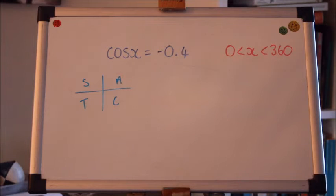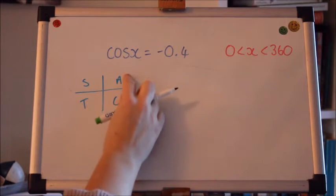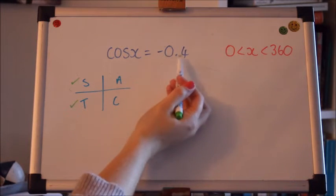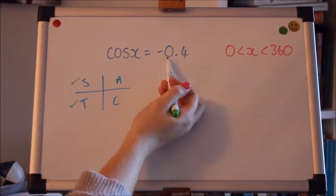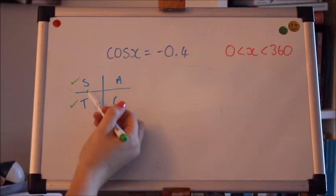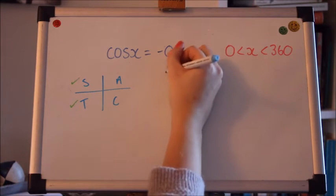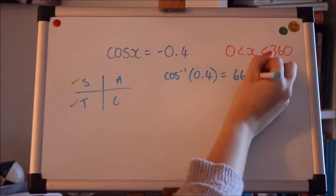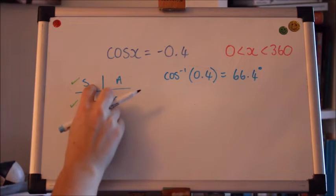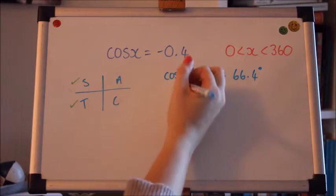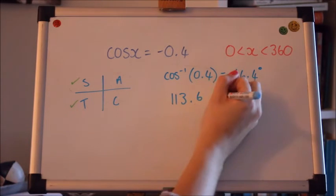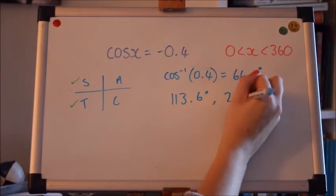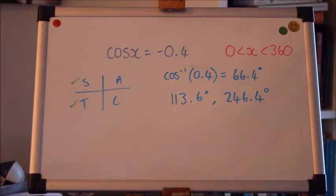This time, we've got a cos example when it's negative. So we're going to use the other two quadrants. Again, we're going to start by pretending it's positive, just to get the acute angle. And then we'll use the acute angle in these two quadrants. So in here, I'm doing 180 minus. And here, 180 plus.